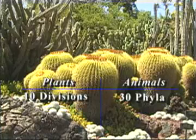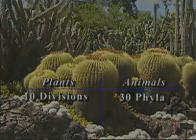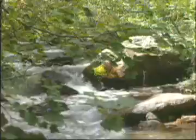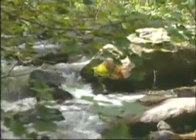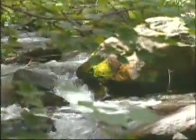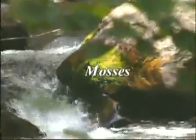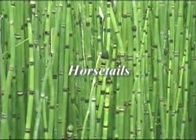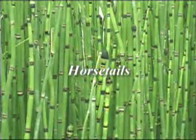Plants that make spores instead of seeds are classified into the five most primitive divisions of the plant kingdom. They include two kinds of mosses, liverworts, horsetails, and ferns.